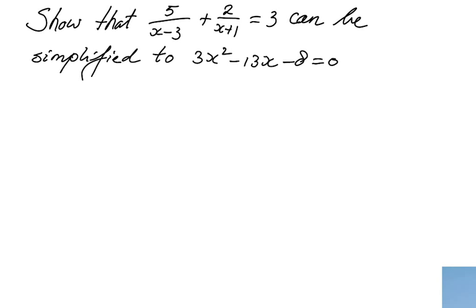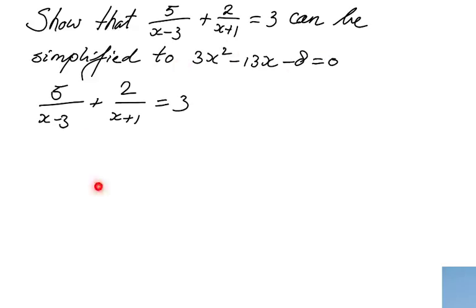Now let's have a go. I'm going to write down the initial equation: 5 over x minus 3. While I'm writing it down, think about what is different between the initial equation and the answer, 3x squared minus 13x minus 8 equals 0. I really like these types of questions because the answer is here — the steps to go from here to there is what you are going for. Hopefully you realize: I have two fractions here, and no fractions there. So what are we going to do? We are going to get rid of those fractions and see what happens.